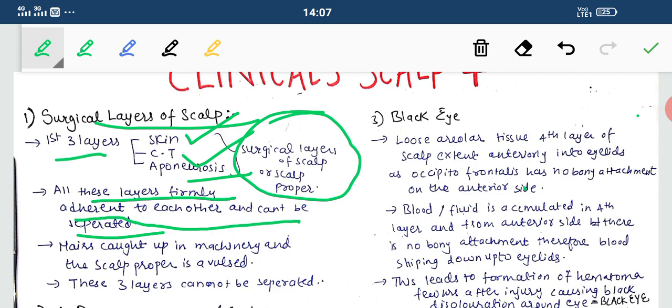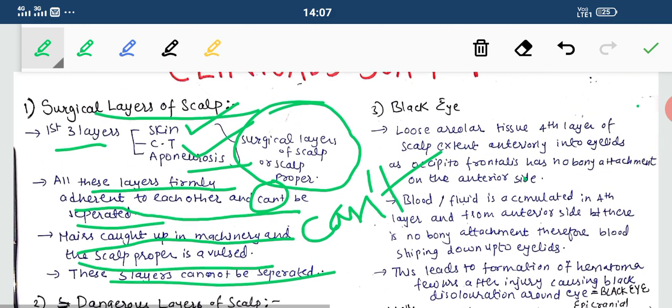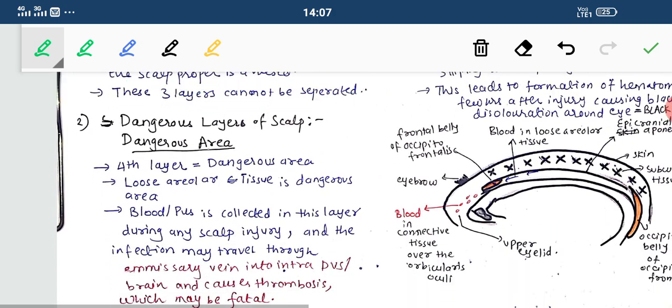If hairs are caught up in machinery and the scalp proper is avulsed, these three layers cannot be separated. The surgical layers of the scalp are the first three layers: skin, connective tissue, and aponeurosis, which are the scalp proper and cannot be separated from each other.